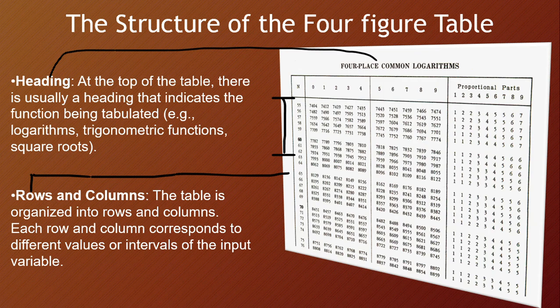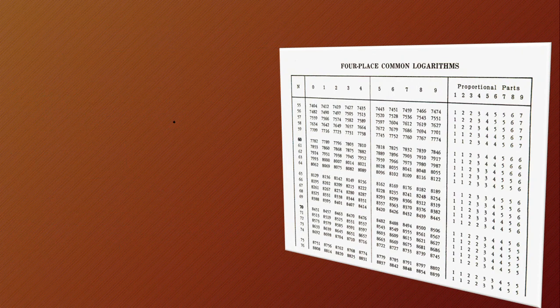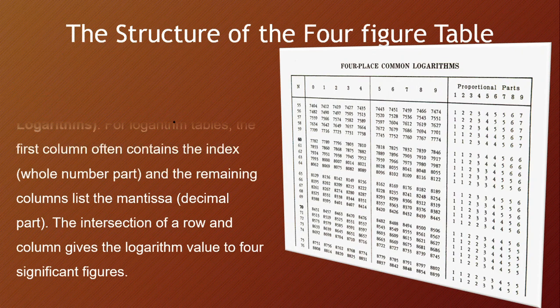We also have rows and columns. The table is organized into rows and columns. Each row and column corresponds to different values or intervals of the input variables. The rows are the horizontal part of the table, and it has the numbers that are under a particular column. So the column is the vertical part in the table.